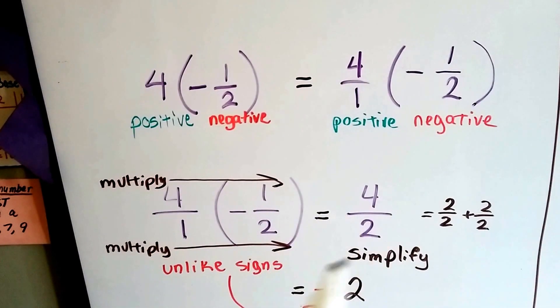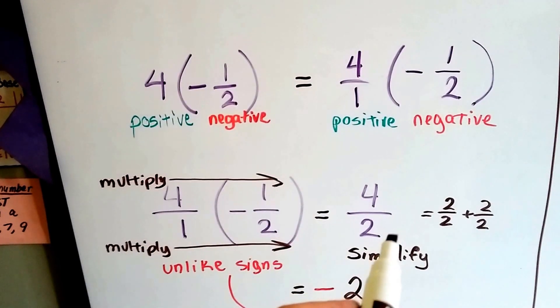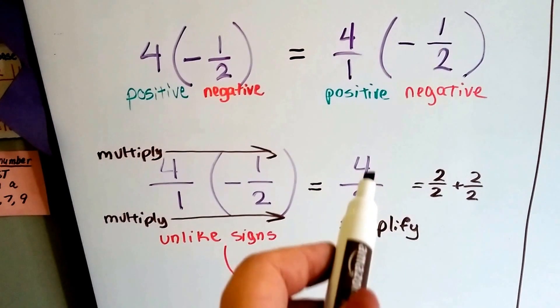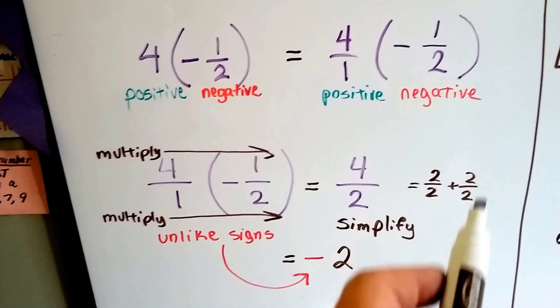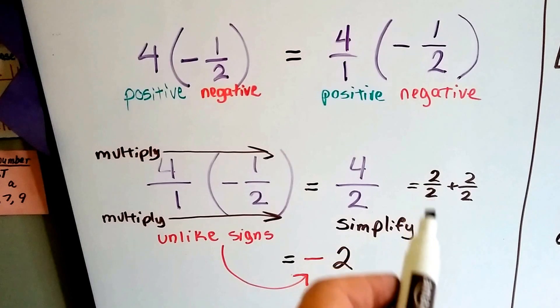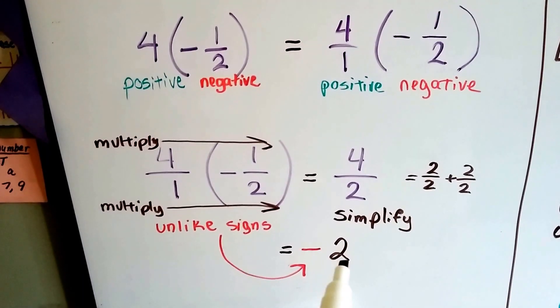4 times 1 is 4, 1 times 2 is 2. We can simplify it. 4 halves means 2 plus 2 plus 2 plus 2. And each of these represent a 1, so we now have a 1 and a 1, so it's 2.